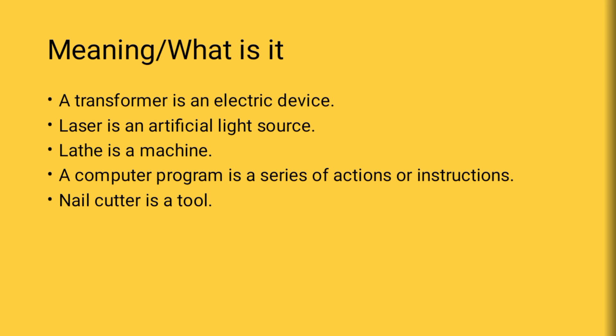A nail cutter is a tool — we cannot say it is a device or instrument. Things made of metal are called tools. Things related to electronics are called devices. If they are related to electrical components, we say electrical device. Like this, you have to define any object or gadget — whether it is an electronic device, electrical device, machine, tool, or instrument.